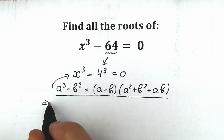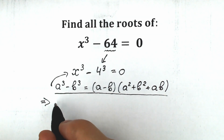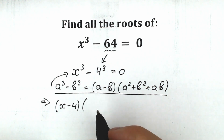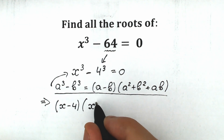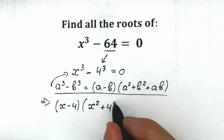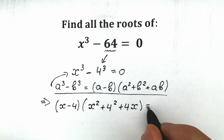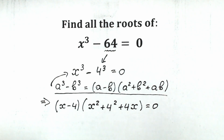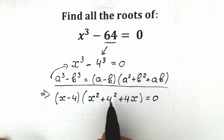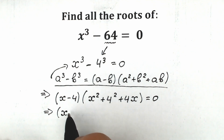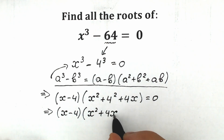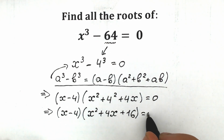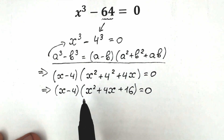Let's apply this formula. In the first parenthesis we have x minus 4, and in the second parenthesis, substituting a = x and b = 4, we have x squared plus 4x plus 4 squared. Simplifying 4 squared to 16, we get: x minus 4, times the quantity x squared plus 4x plus 16, equal to zero.